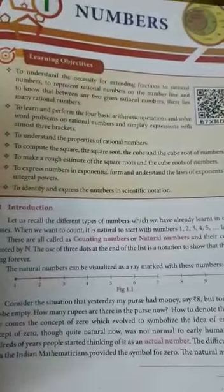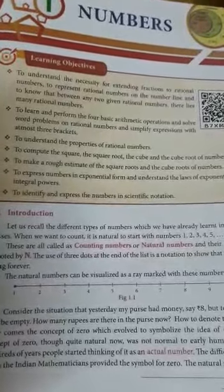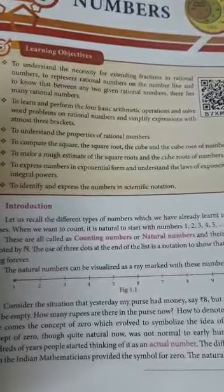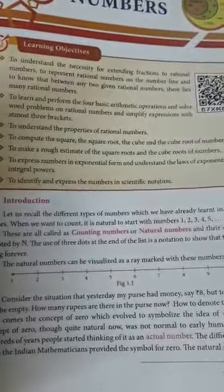That is none other than natural number, real number, whole number, integers and complex numbers, rational numbers, irrational numbers. These are the names we already known about the numbers.